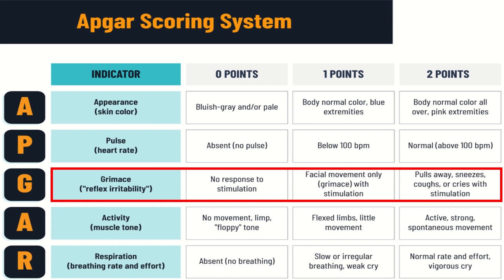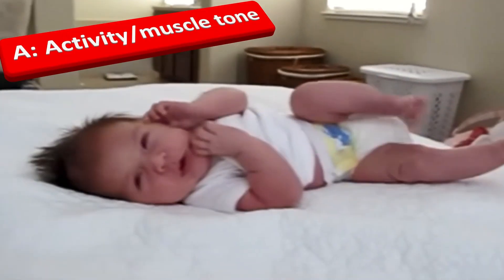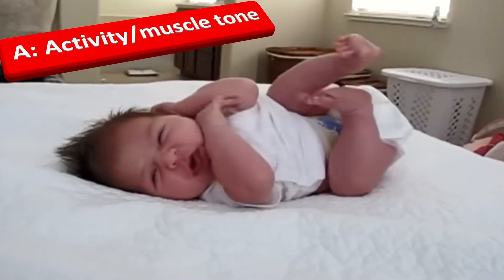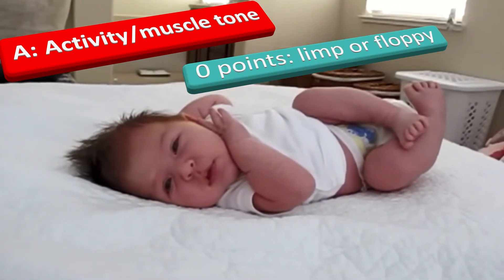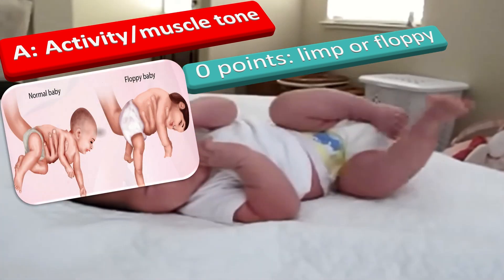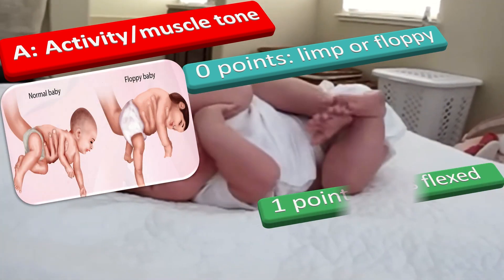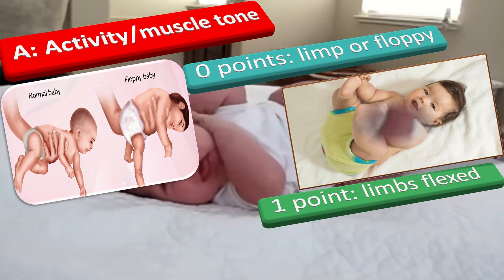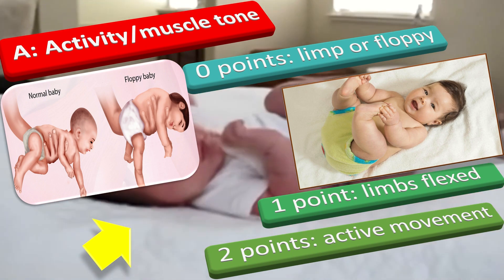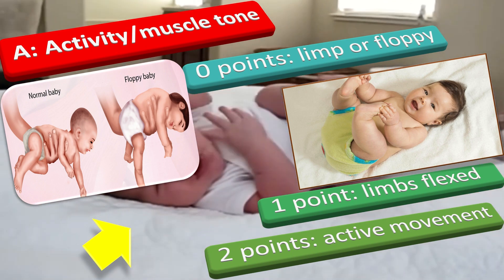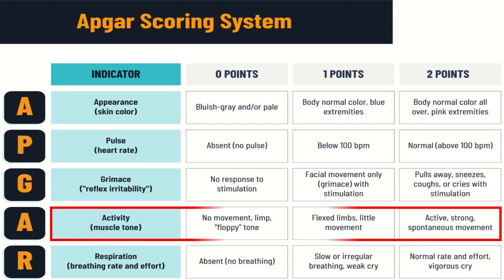After grimace, the next letter is A for activity or muscle tone. When the baby is limp or floppy, we give 0 points. When the limbs are flexed, we give 1 point. We give 2 points when the baby is performing active movements. In the APGAR scoring system chart, A is for activity or muscle tone, and different points are given in different situations.